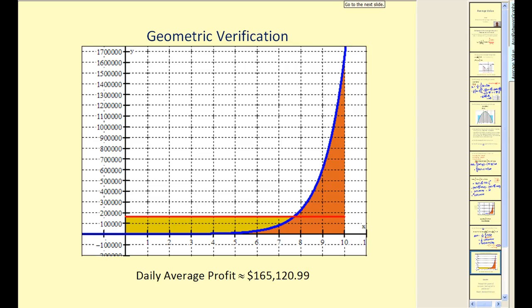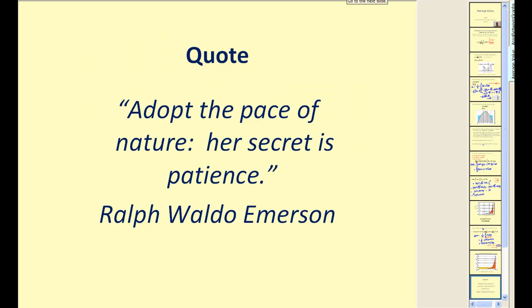Let's look at a graph. In blue we have the marginal profit function. The y-value of the red horizontal line represents the average daily profit. The area of the slim rectangle formed by that average value and the width of the interval equals the area under the marginal profit function. I hope this video helped. Thank you for watching.